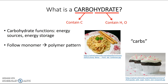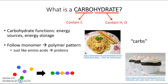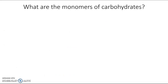They also follow that monomer-polymer pattern like we've seen before. Just like amino acid monomers can be joined to form protein polymers, putting together lots of molecules to form a chain, carbohydrate monomers can be put together to form carbohydrate polymers. We're going to start by learning about the monomers of carbohydrates, which are molecules called monosaccharides.